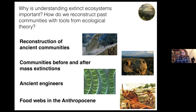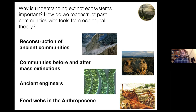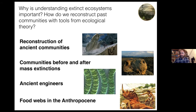Part of this is focusing on reconstructing the structure of interactions. One of the advantages of looking into the past is being able to see how communities were structured before and after large mass extinctions. One of the big open questions today is how communities will respond to climate change and anthropogenic disturbances. We can gain a lot of clues by seeing how communities responded to large disturbances on record. I'll also change gears and think about how organisms have structured the biosphere and the role of ancient ecosystem engineers, then finally focusing on food webs in the Anthropocene.